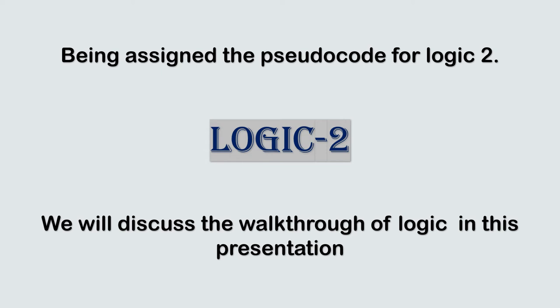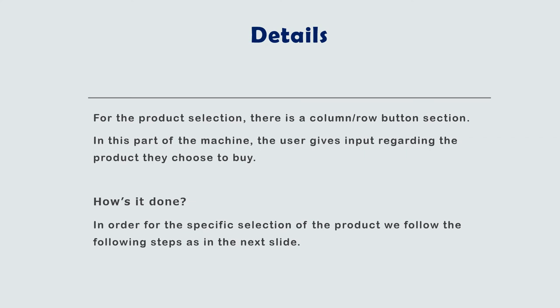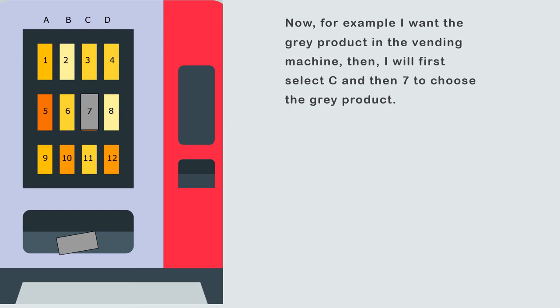Now I would describe a pseudo code of Logic 2, which we will discuss in the walkthrough of logic in this presentation. This is the Logic 2 overview — the selection of a product from the vending machine. In the details, we can see there is a column and row button section in this part of the machine, showing which product we can choose or buy and how to pay. In the column section there will be alphabetical letters, and in the row we will see numbers. For reference, see the photo in slide 7.